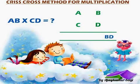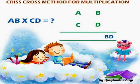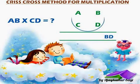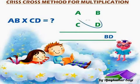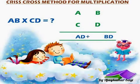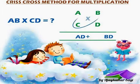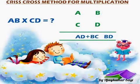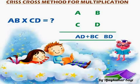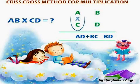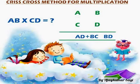After multiplying the right side vertical digits, we have to multiply all of ABCD crosswise. First take A into D — A into D we get AD. Plus, multiply crosswise B into C — B into C we get BC. Then we multiply the left side vertical digits, that is A into C — A into C we get AC.